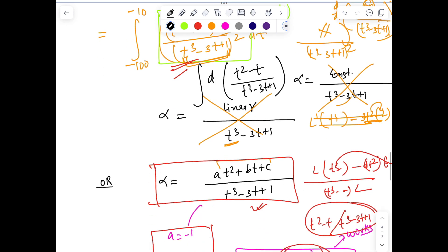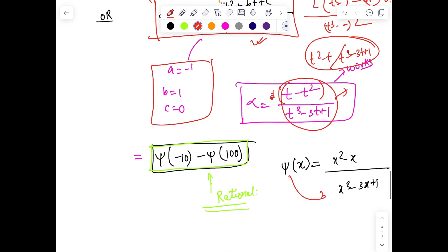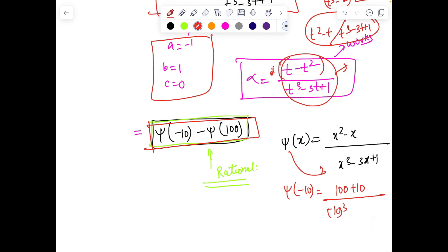This entire quantity is d((t² - t)/(t³ - 3t + 1)). The integration of this—if I define this inside as ψ(t)—the answer is ψ(-10) - ψ(-100). That's clearly rational because if I calculate ψ(-10), we have (100 + 10)/(-1000 + 30 + 1), which is a rational number. Similarly, ψ(-100) is rational, so rational minus rational is rational. This value is not 90—we're getting a fraction.